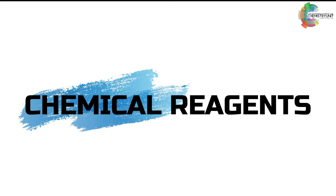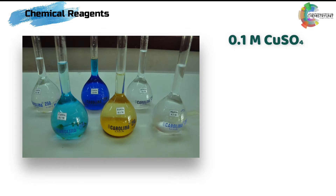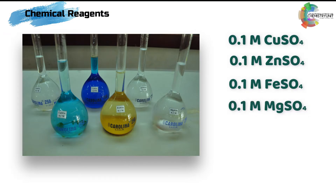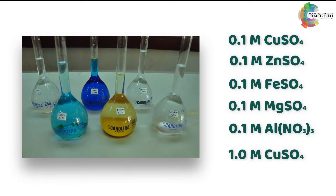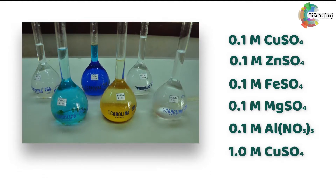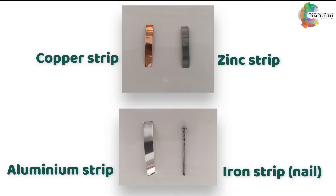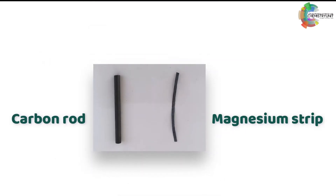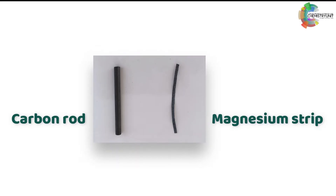These are the reagents that you will have to use for this experiment: 0.1 molar copper sulfate, zinc sulfate, iron sulfate, magnesium sulfate, aluminum nitrate, and 1.0 molar copper sulfate solution. You will also need copper, zinc, aluminum and iron strips, a carbon rod, and a magnesium strip.